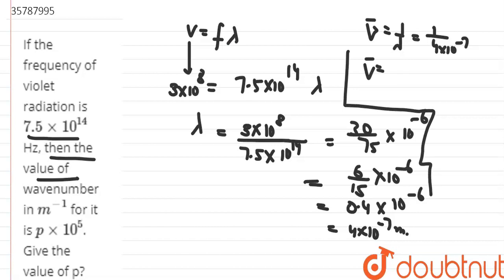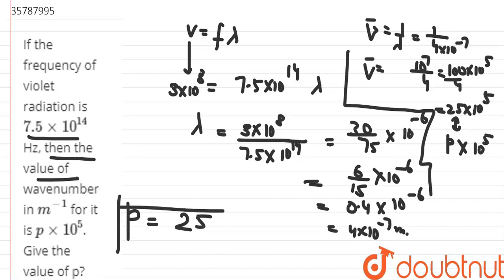The wave number equals 10⁷ divided by 4, which equals 100 × 10⁵ divided by 4, which equals 25 × 10⁵. Comparing with p × 10⁵, we get p equals 25.